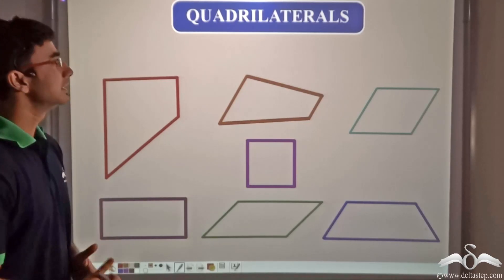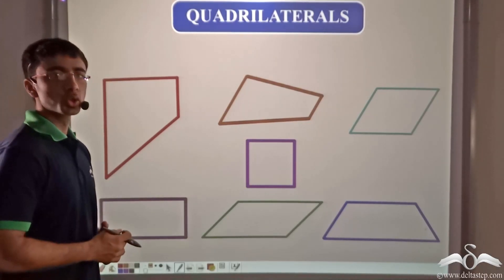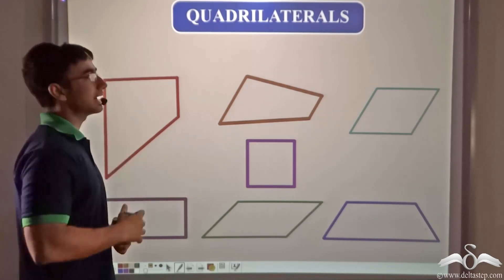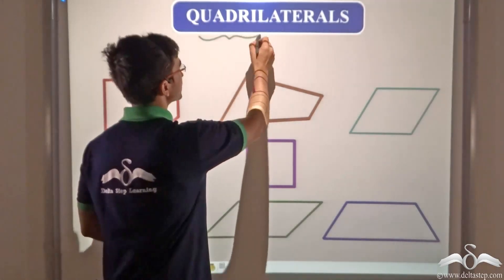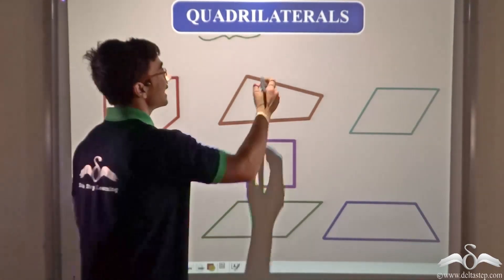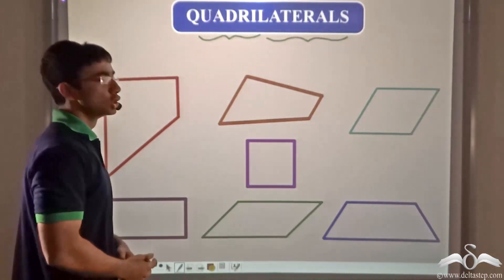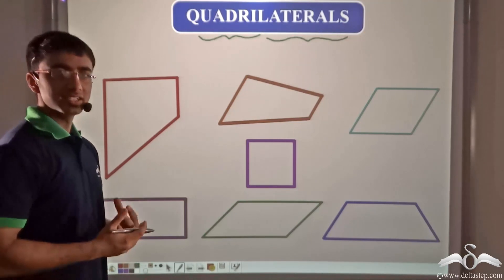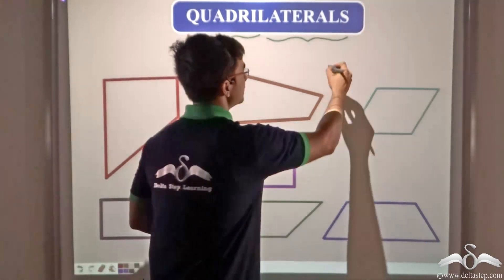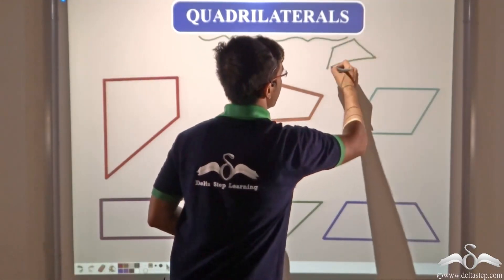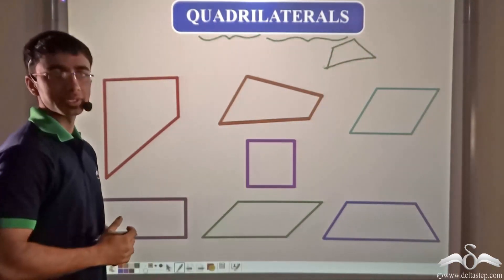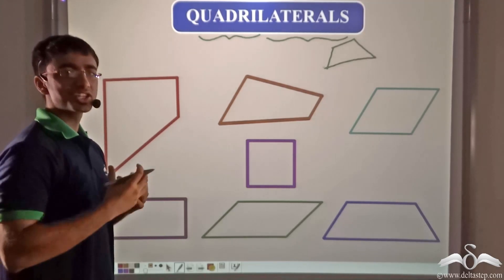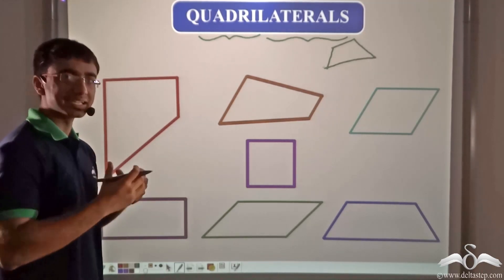Four-sided polygons are known as quadrilaterals. The term 'quadrilateral' is derived from two Latin words: 'quadri' meaning four and 'latus' meaning sides. We are going to talk about certain quadrilaterals and try to group them using some common characteristics.